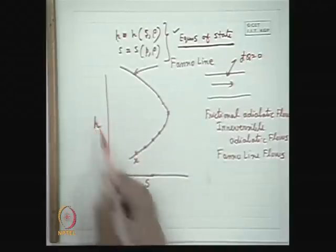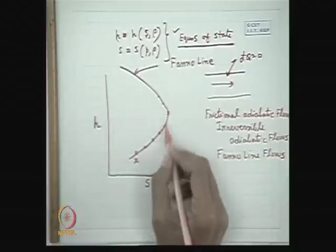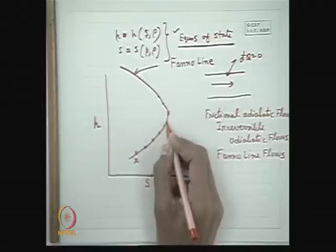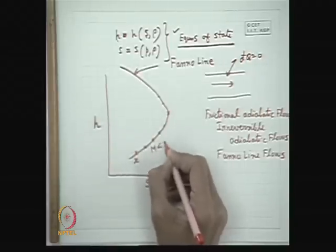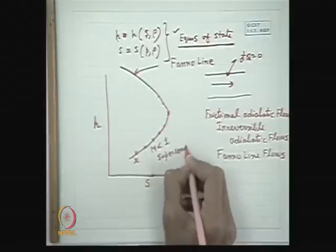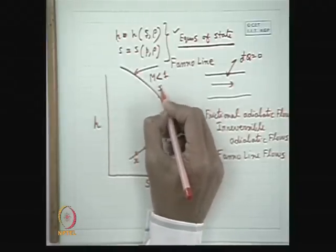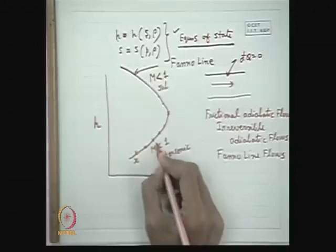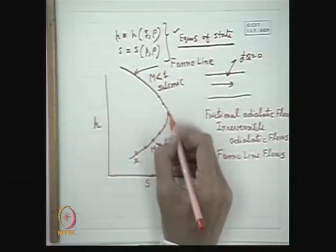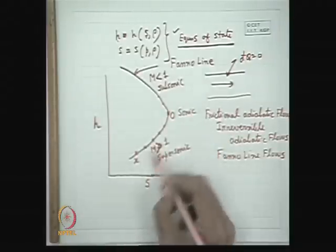It can be shown that the lower part of the Fanno line curve represents the supersonic region (M > 1), the upper part represents the subsonic region (M < 1), and point O at the maximum entropy represents the sonic condition. Before proving this mathematically, let us reason physically: in a supersonic flow, starting from any point on the curve, the downstream point must move to the right.